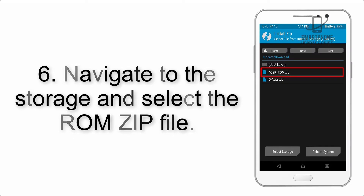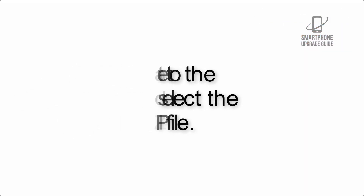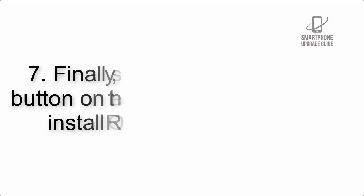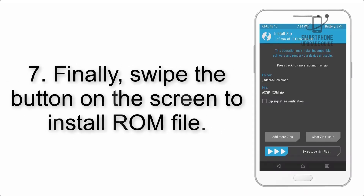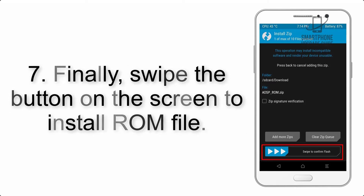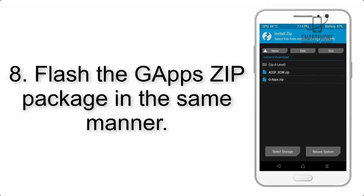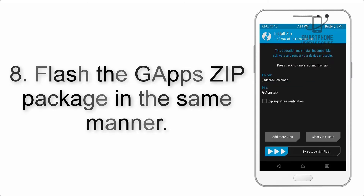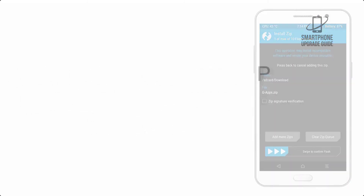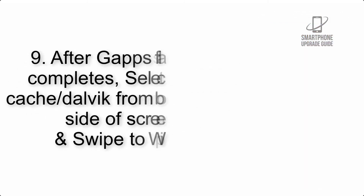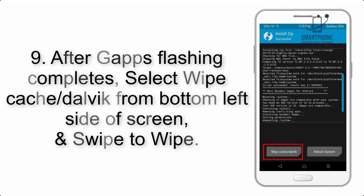Step 6: Navigate to the storage and select the ROM zip file. Step 7: Swipe the button on the screen to install the ROM file. Step 8: Flash the GApps zip package in the same manner. Step 9: After GApps flashing completes, select Wipe Cache and Dalvik.